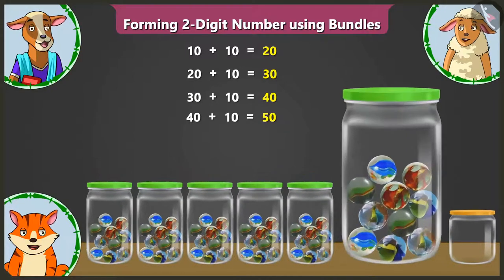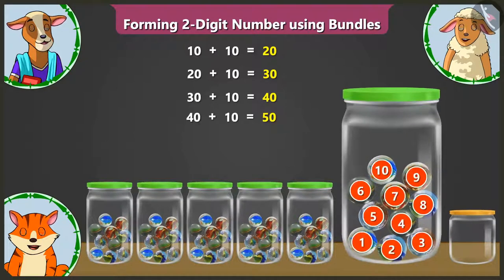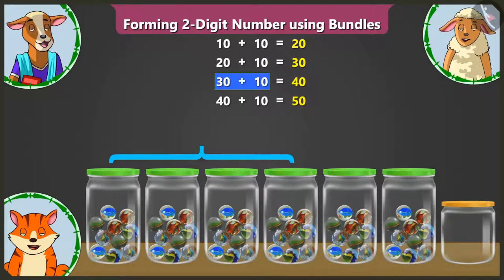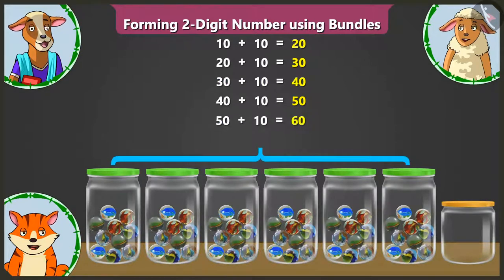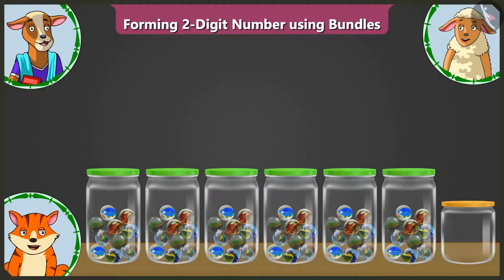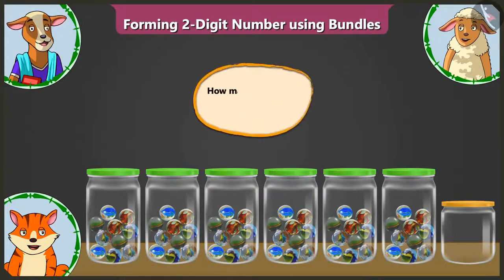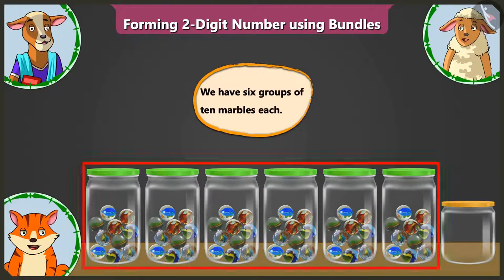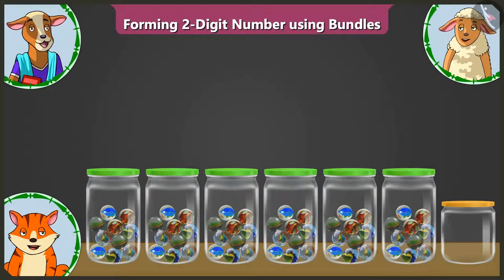This sixth jar also has ten marbles. That makes it twenty, thirty, forty, fifty, sixty — six groups of tens. You tell me, Lily, how many groups of tens do we have? We have six groups of ten marbles each. That's right.